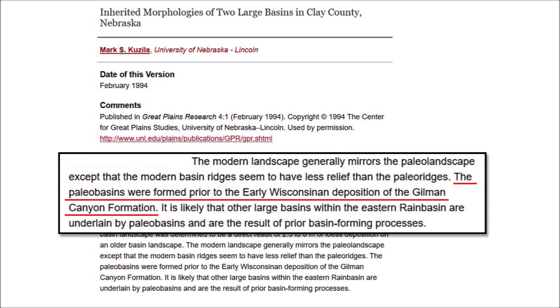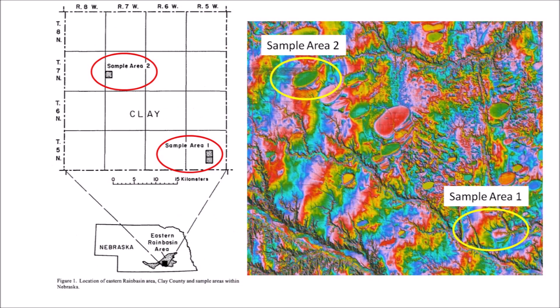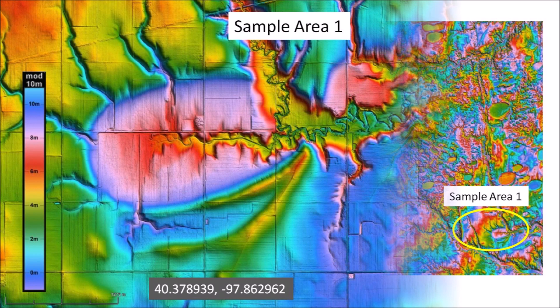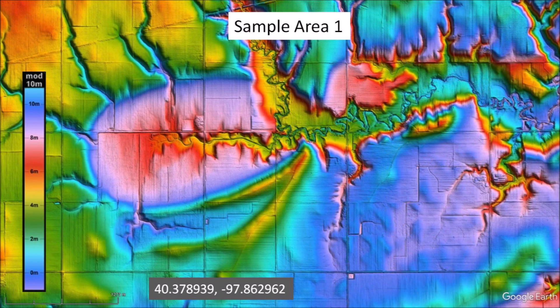Kuzila deduces that the basins formed more than 26,000 years ago and were then covered by windblown dust. However, we will see that if the basins were formed by impacts, they could have a more recent origin. Kuzila performed his study before LiDAR became widely used for geological imaging. LiDAR is a laser ranging technology that greatly improves the visualization of the terrain. This image shows the two sample areas selected for study in Clay County, Nebraska. Kuzila's sample area 1 has been greatly modified by erosion.